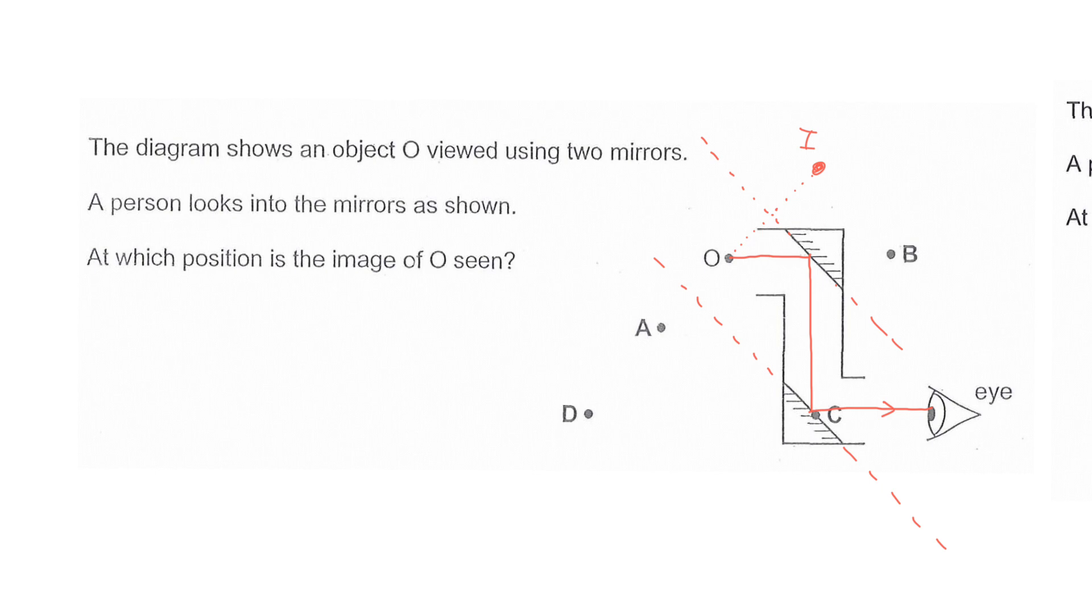Can you see this? You treat it as an object, and now the object distance is here, and equal distance, it will fall at this place here. Therefore, the image that you see will seem to appear at D. So that's how you solve this kind of question. Alright, thank you.